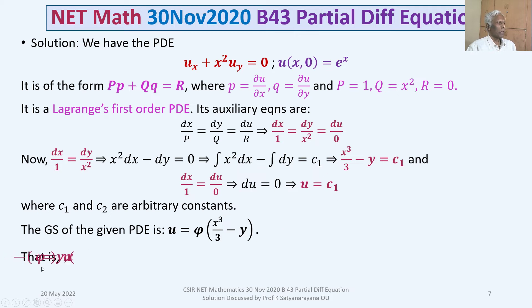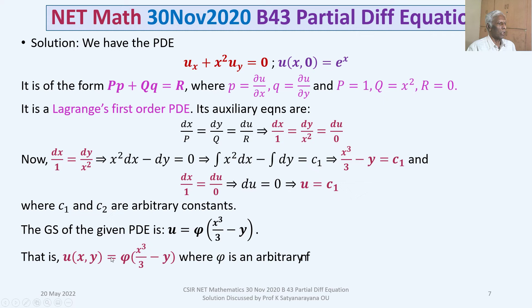The general solution of the given partial differential equation is u(x, y) = φ(x³/3 − y), where φ is an arbitrary function.